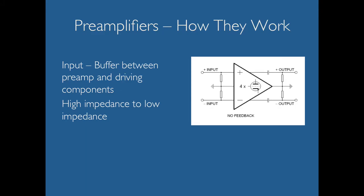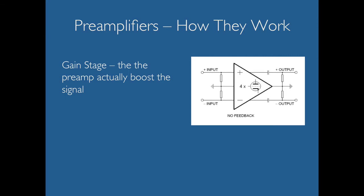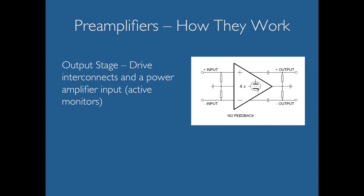So how do preamplifiers actually work? Basically, the input of your preamplifier is a buffer between the preamp and driving components — it's usually taking a high impedance to a low impedance. There's a gain stage within the preamplifier that actually boosts the signal. Then the output stage drives interconnects and a power amplifier input or active monitors, so it can either drive an amplifier feeding speakers or go directly to active speakers.